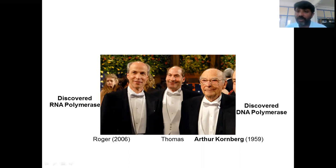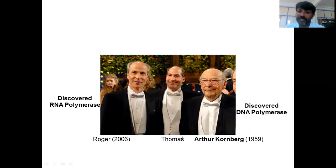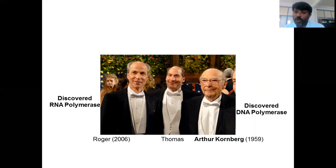Arthur Kornberg tried to publish his discovery of E. coli DNA Polymerase I in the Journal of Biological Chemistry, but the editor felt it was not suitable for publication and returned the manuscript. Kornberg resubmitted the same manuscript in 1957 to the same journal and it was published. Recognizing the importance of this discovery, in 1959 Arthur Kornberg was awarded the Nobel Prize.